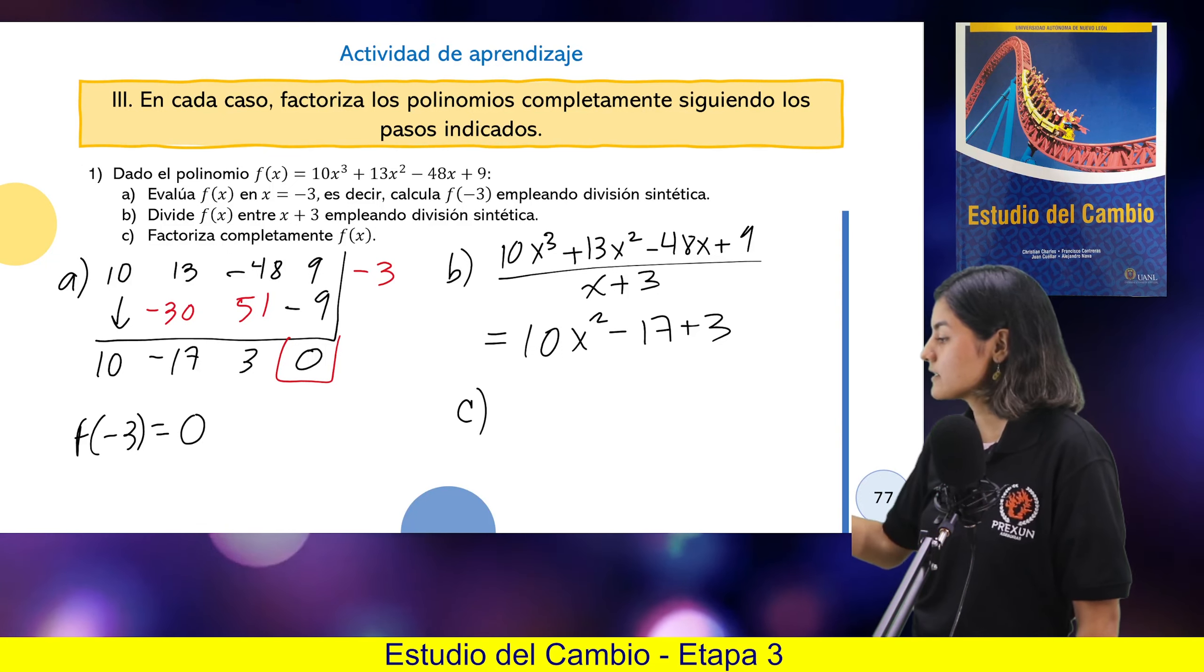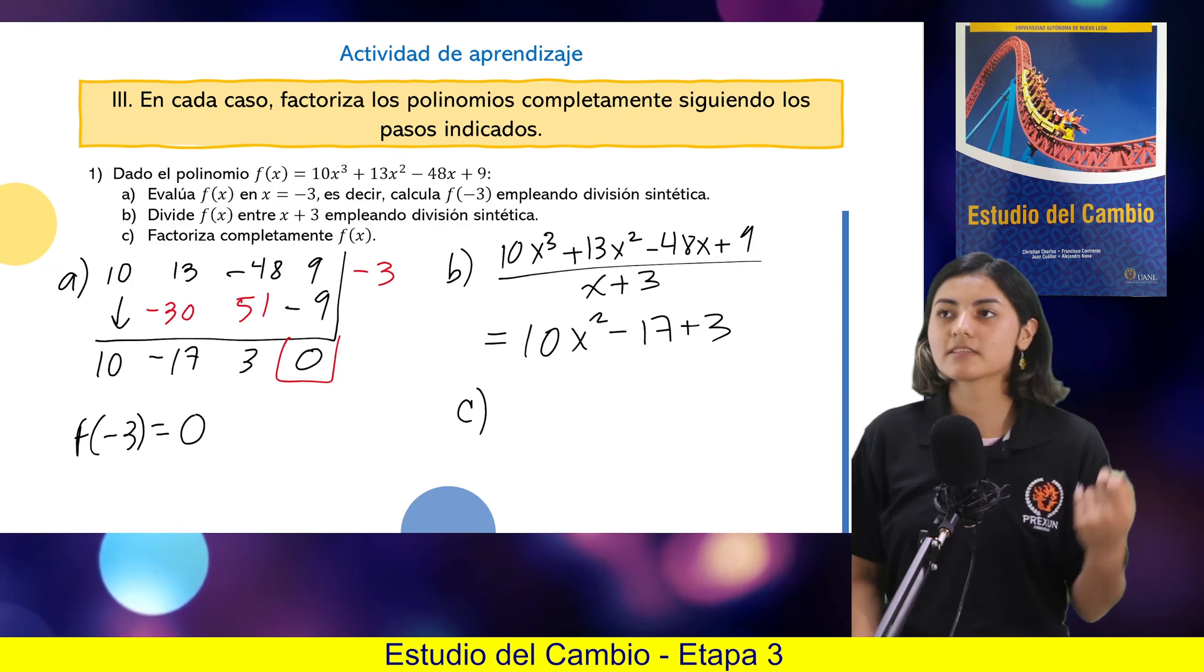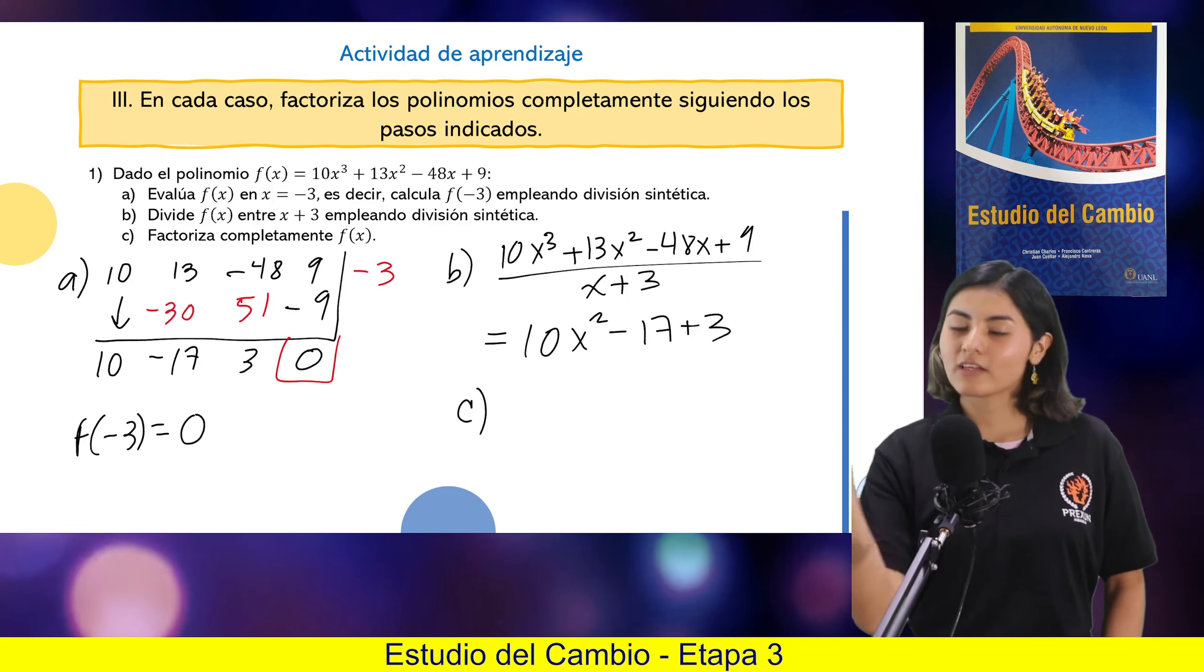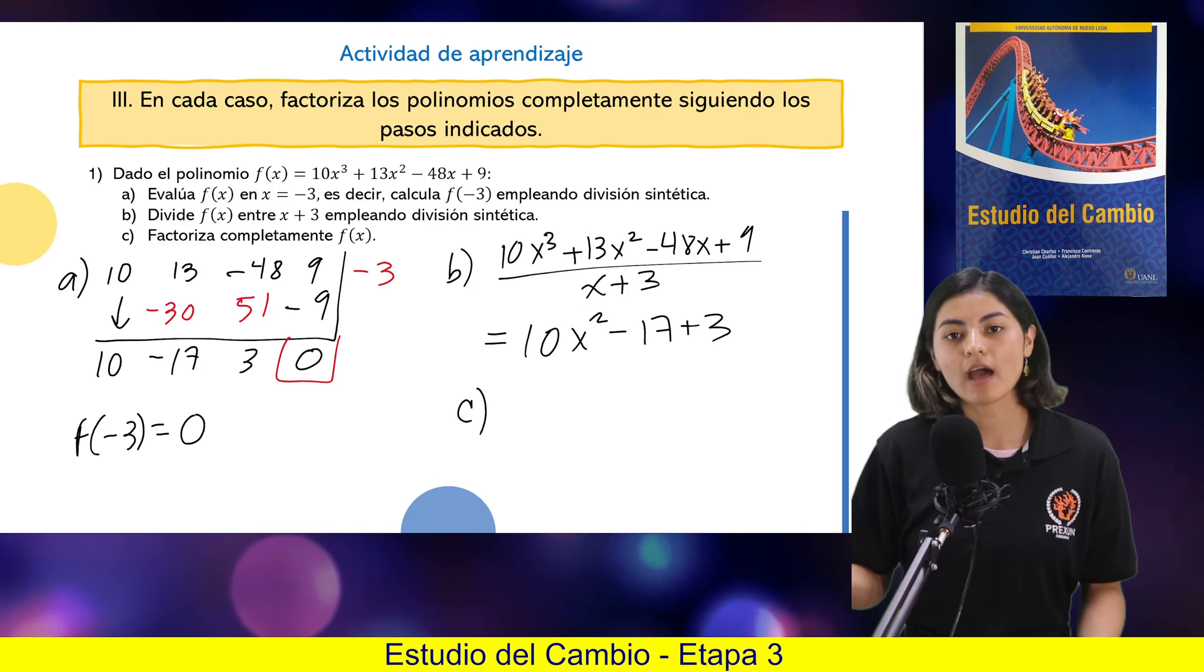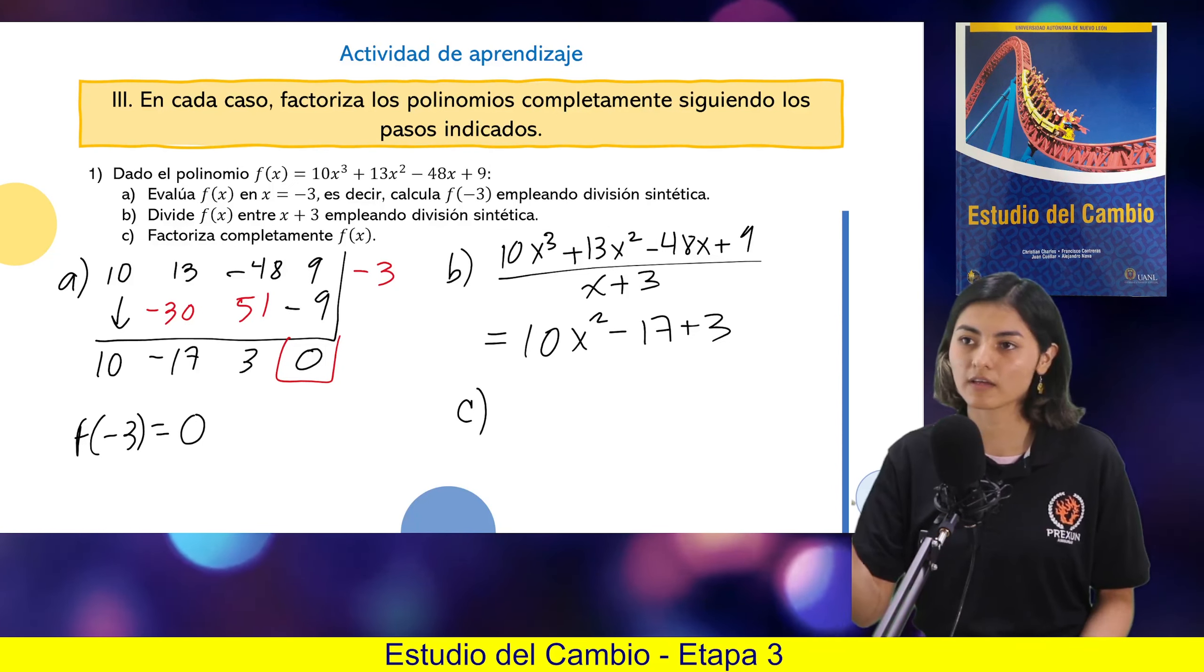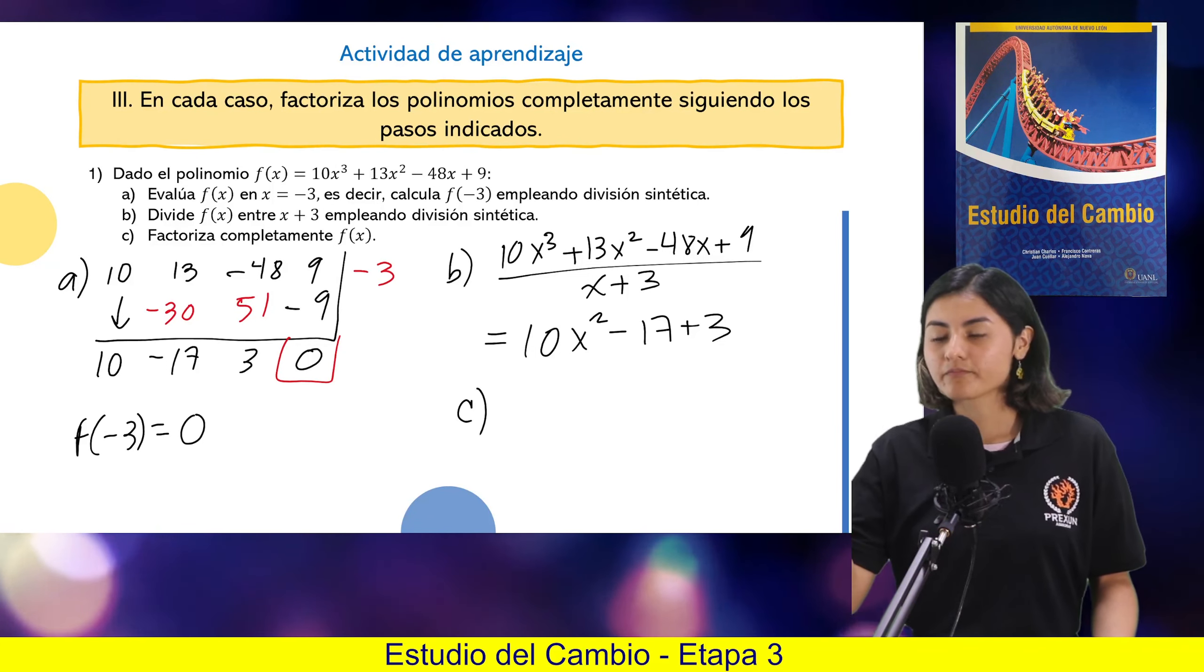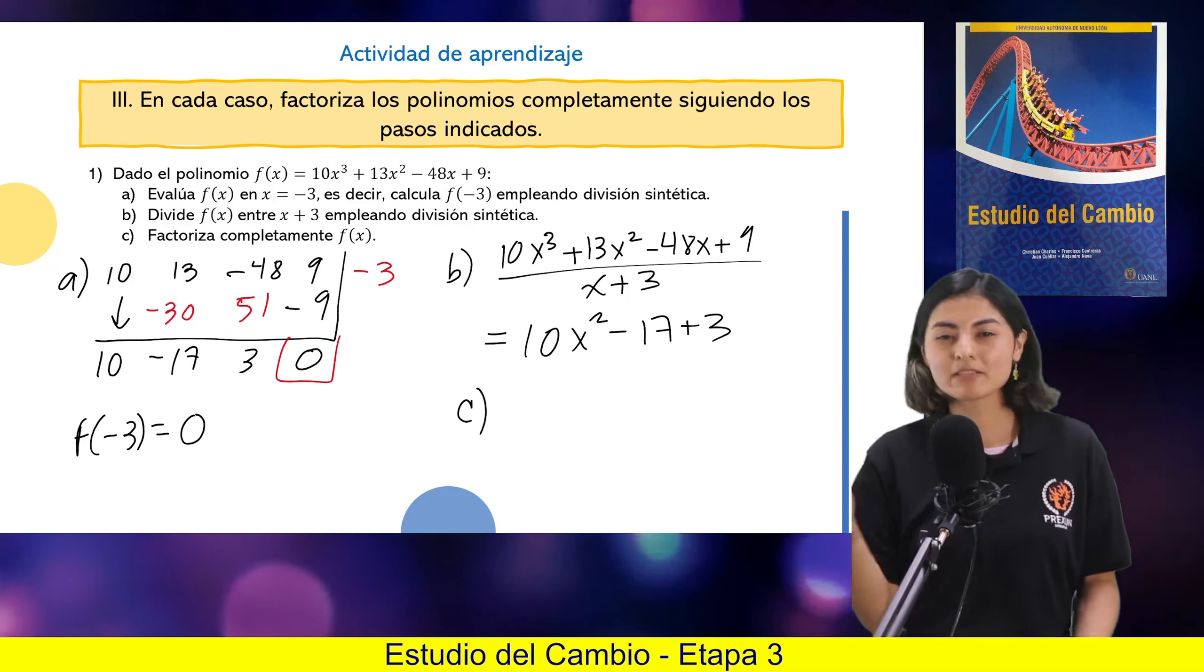Entonces, ahora para el inciso C, nos pide factorizar completamente f de x. ¿Qué quiero decir con esto de que es raíz, que es factor y tal? Pues quiere decir que es como un pedacito de la factorización del polinomio. Nosotros estamos acostumbrados a ver polinomios de segundo grado, factoriza la cuadrática, y son puras cuadráticas siempre.